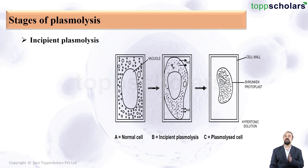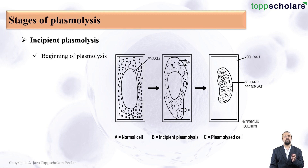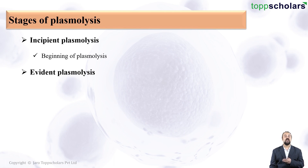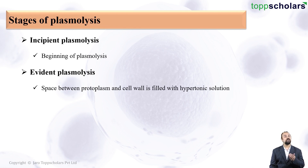Diagram A shows a normal cell. The second diagram shows incipient plasmolysis, meaning the beginning or just the start of plasmolysis, wherein small amounts of water start to move out of the cell. After which we have evident plasmolysis — this is the stage where the space between the protoplasm of the cell and the cell wall is filled with hypertonic solution.